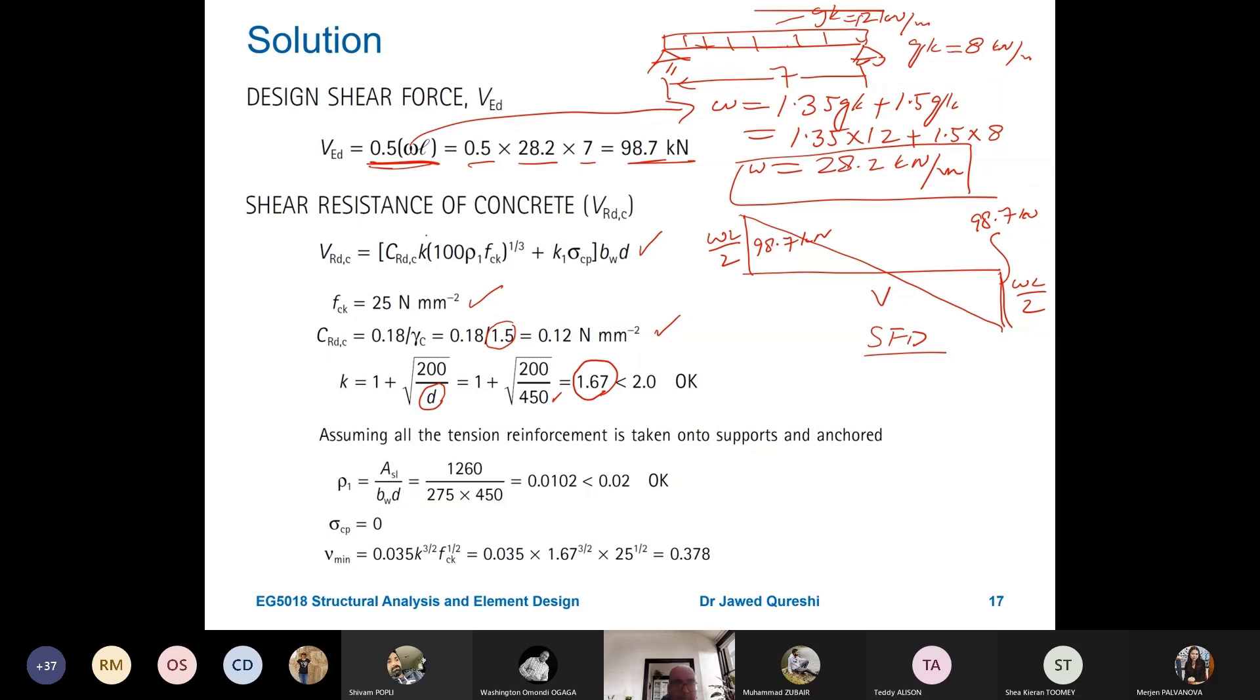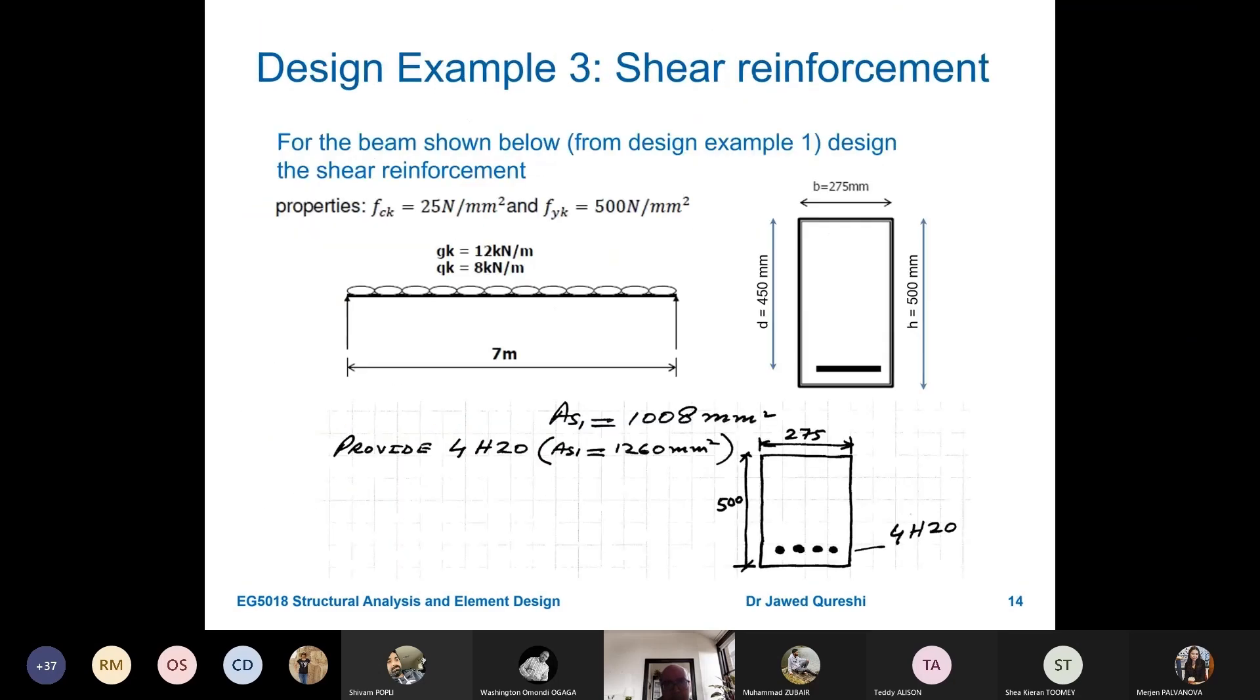Now, I have value of K. I have value of CRDC. Next thing is I have to find out this Rho 1. Rho 1 is related to tension reinforcement, assuming that tension reinforcement is taken onto the supports and anchored. And the formula for Rho 1 is AS1 divided by BWT. That is called reinforcement ratio. So, AS1 is area of tension reinforcement. This is to be taken as the area of provided tension reinforcement, not the one which is required.